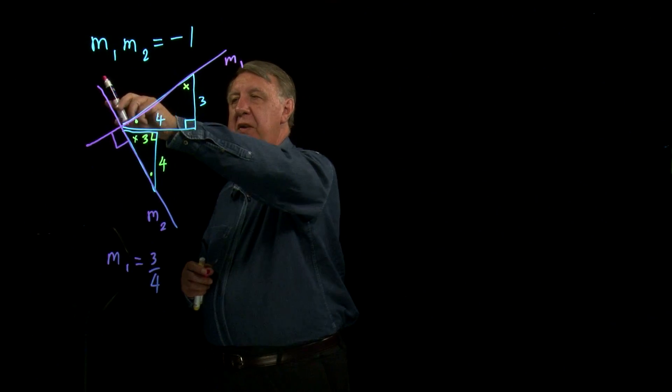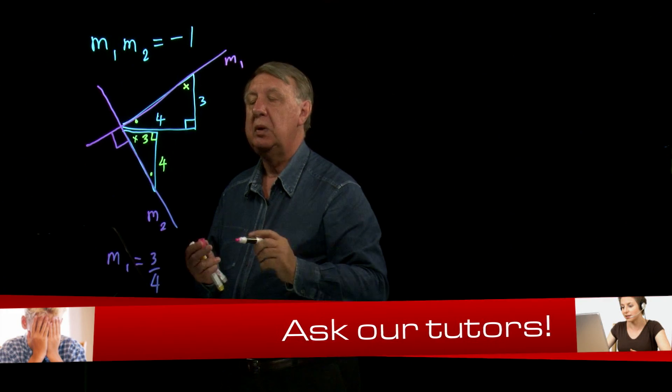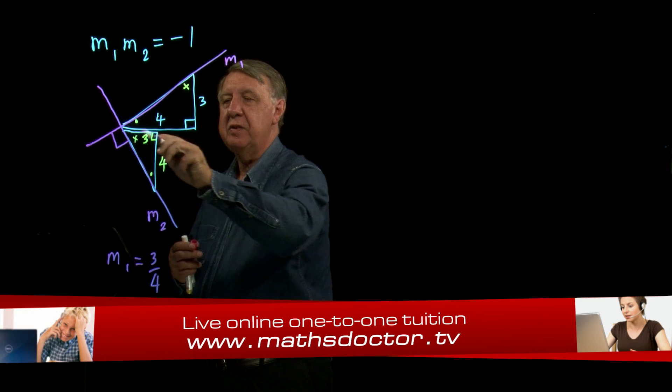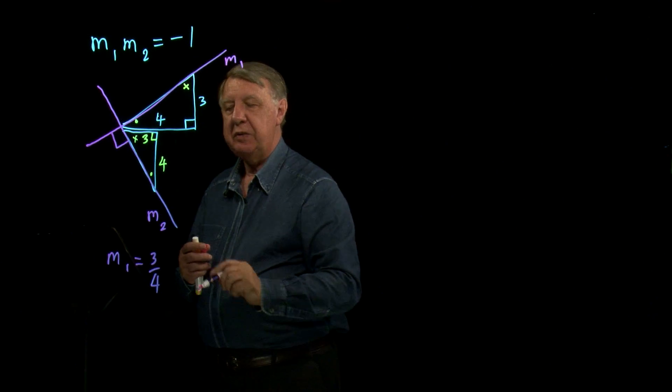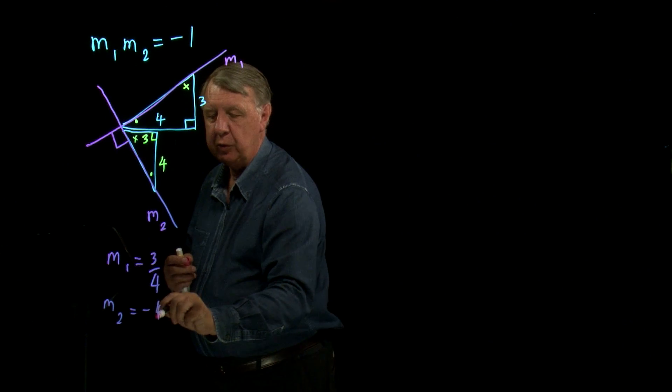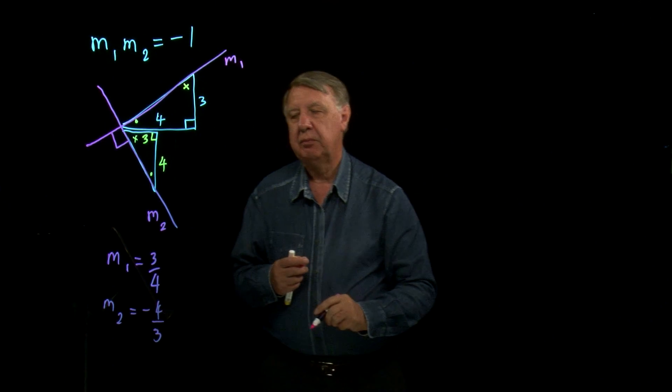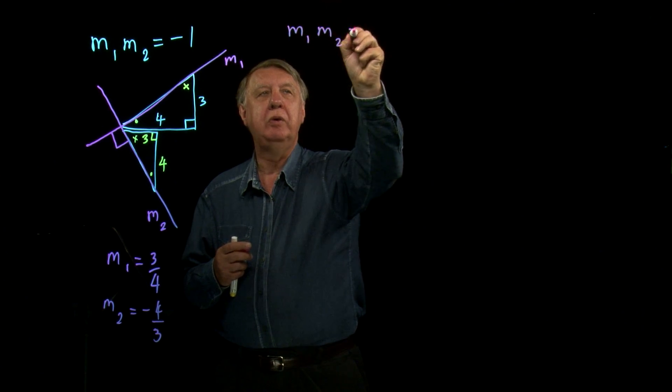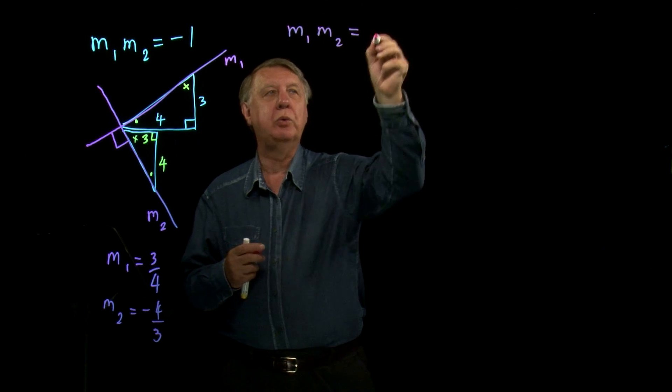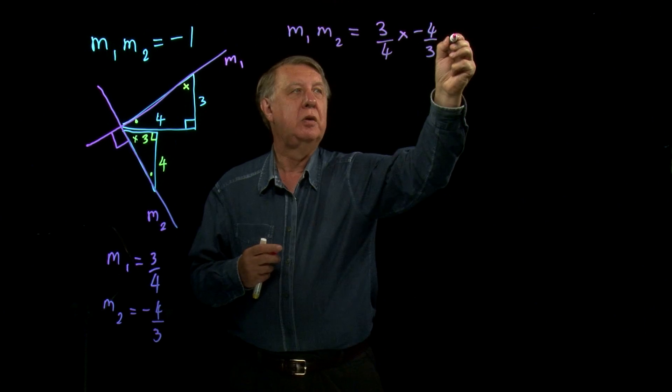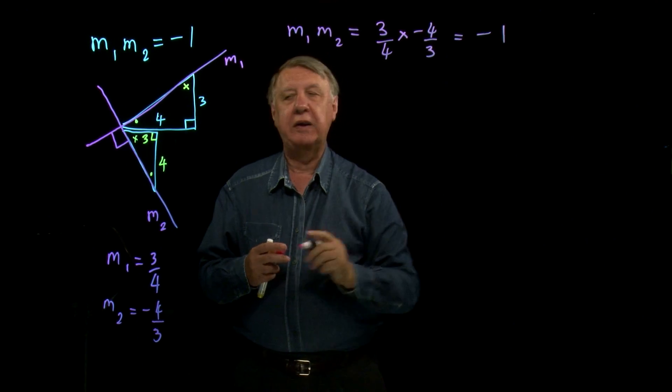Now look at the m2 line. The m2 line is of course coming down this way, so it's a negative gradient. The y distance down is 4 and the horizontal distance is 3, so m2 is negative 4 over 3. And so m1 times m2 equals 3 quarters times negative 4 over 3, which is negative 1.